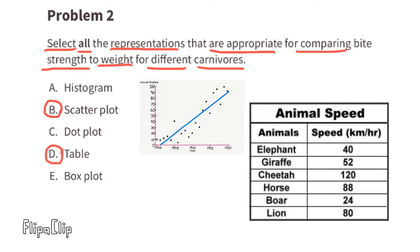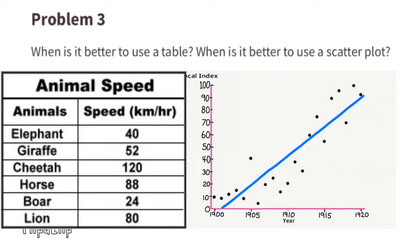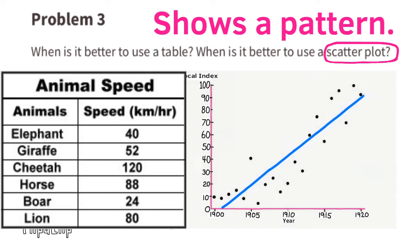The two types of representation that I choose are scatter plot and table. I especially like the table because it's easy to read. Problem number 3: When is it better to use a table? I find it better to use a table when you want to see precise information. When is it better to use a scatter plot? I like to use scatter plots when I'm looking to see if there's a pattern or maybe if there's no pattern.